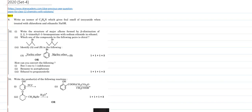Question number 8: we need to write an isomer of the formula C3H9N. Now, it has a nitrogen atom, which means it can be an amine or a cyanide. But they've given a specific characteristic of this compound — it gives the smell of isocyanide when treated with chloroform and ethanolic NaOH.